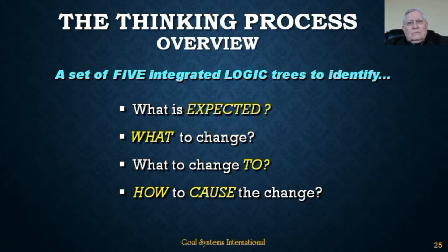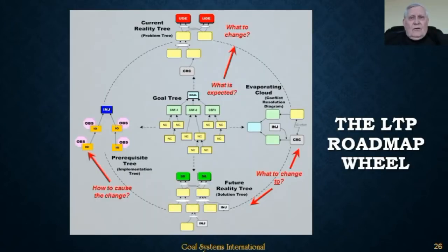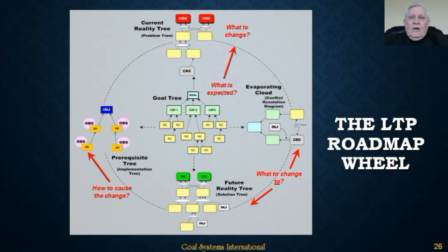A whole system analysis begins at the center of this wheel with a Goal Tree to define the expected performance of the system. That system performance standard becomes the entering argument for the Current Reality Tree, or CRT. The purpose of the CRT is to determine what components of the system are responsible for the system's failure to achieve its expected performance — that is, the goal in the Goal Tree — revealing what we need to change to close the gap between what the system is achieving now and what it should be achieving.